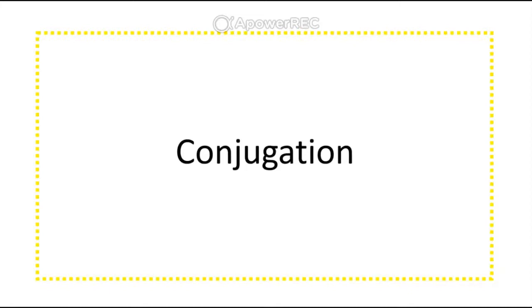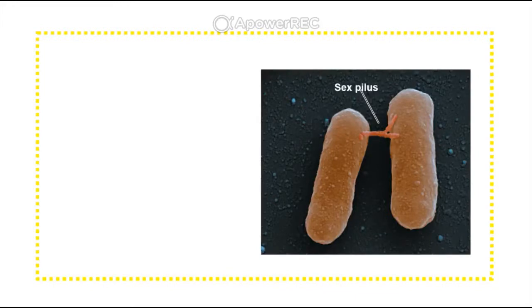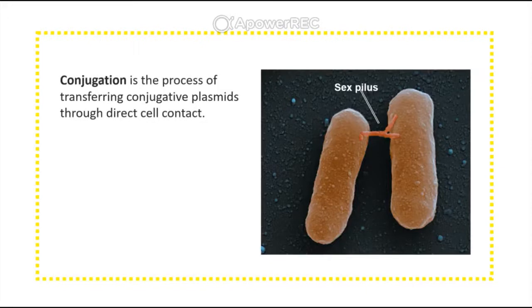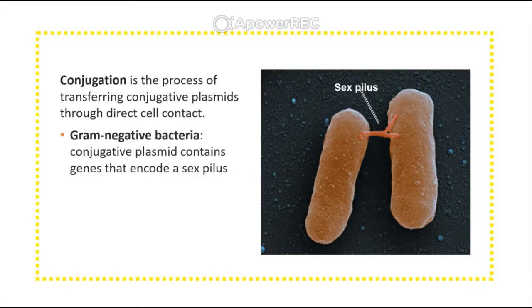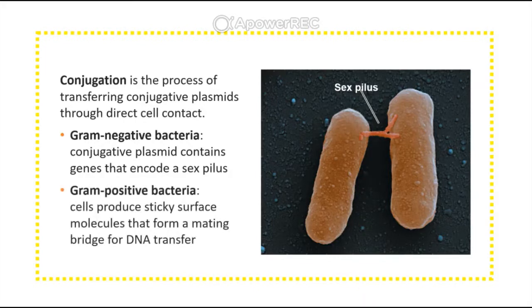Conjugation is a form of horizontal gene transfer. It is the process of transferring conjugative plasmids through direct cell contact between bacterial cells. In gram-negative bacteria, conjugation takes place through a sex pilus encoded by an F-positive bacterium. In gram-positive bacteria, they can produce a sticky surface to bind to each other and form a mating bridge for DNA transfer.